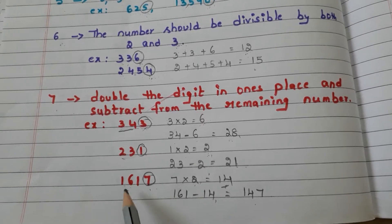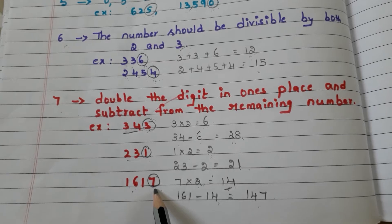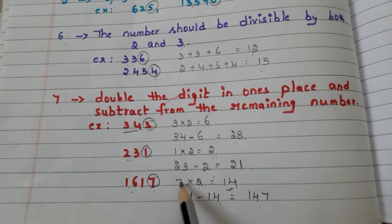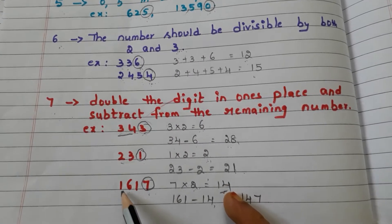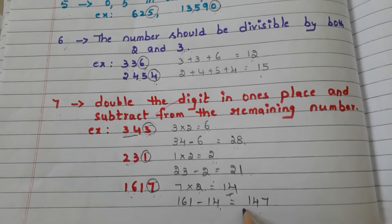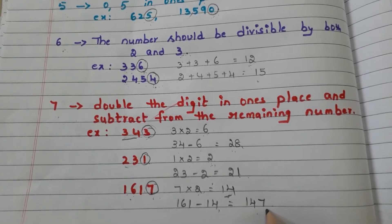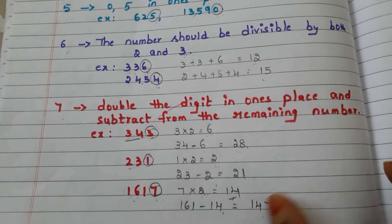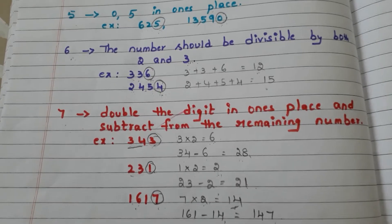Let us go with the last number: 1,617. Take the last digit, 7. Double that digit — we multiply by 2. 7 times 2 is 14. We have to subtract this 14 from the remaining number 161. 161 minus 14 is 147. And 147 is a multiple of 7. So, 1617 is divisible by 7. Like this, we check for 7.